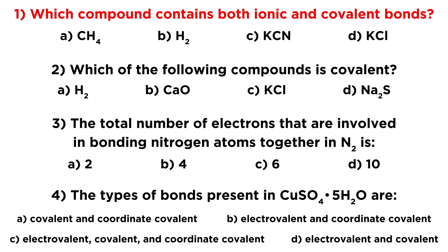So this first question asks which compound contains both ionic and covalent bonds. And so just going from the left, we can see methane, we see hydrogen, we see KCN, and we see KCl. So those first two, A and B, are covalent. Those are all covalent bonds.